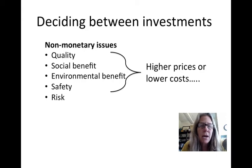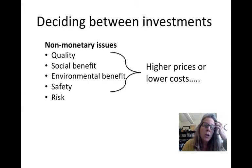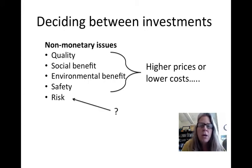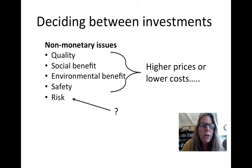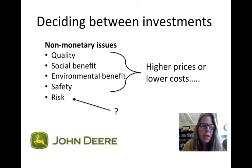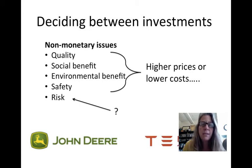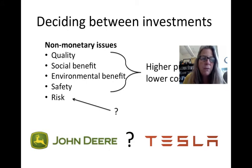These first four are possible to convert to either higher prices or lower costs when we look at the monetary benefits. But risk is a little bit harder to do. Like if it was a high-risk investment, how can we include that as a monetary benefit in an analysis? It's quite difficult. As an example, I'm going to look at something like investing in John Deere — say you want to buy some stock. So are you going to invest in John Deere or are you going to invest in Tesla? They're both very different levels of risk.